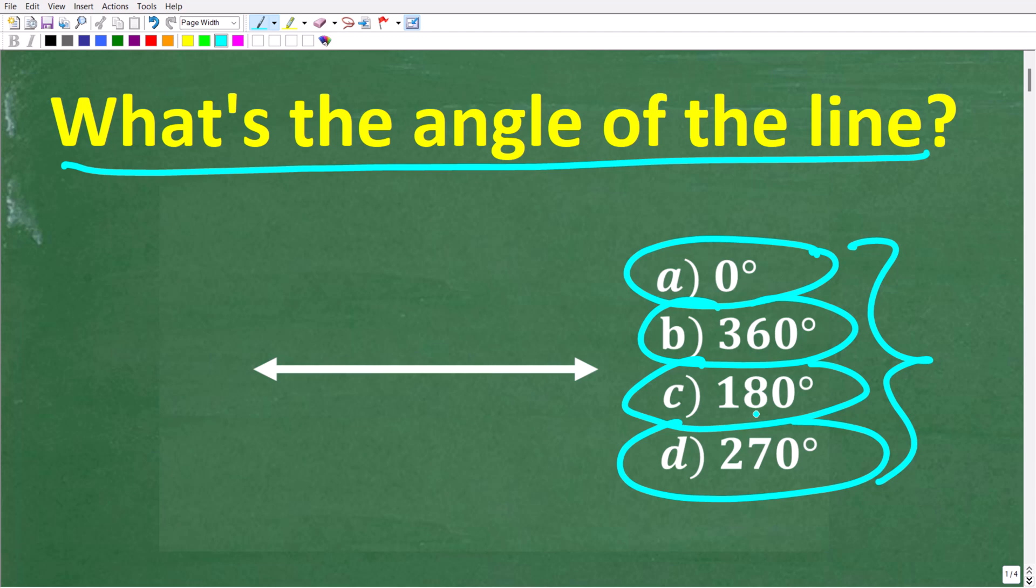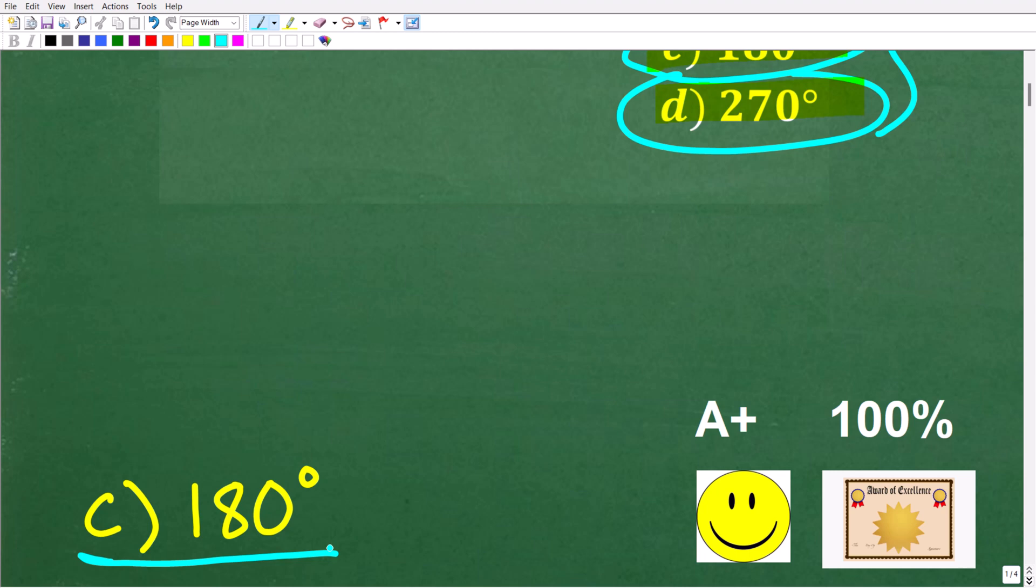So again, we have a line, and what is the angle to this line? Is it 0 degrees, 360 degrees, 180 degrees, or 270 degrees? Let's take a look at the solution. The correct answer here is C, 180 degrees.